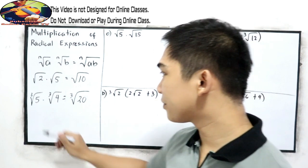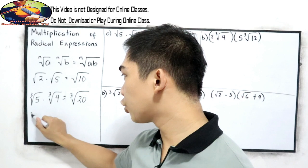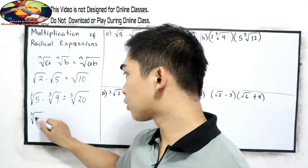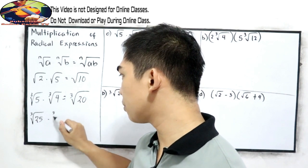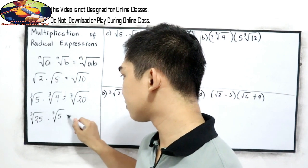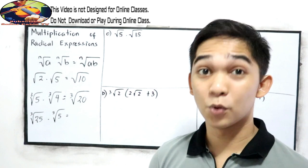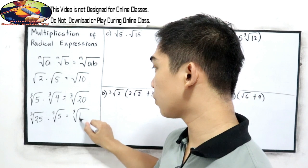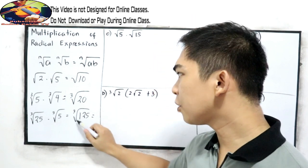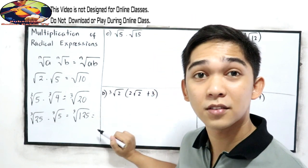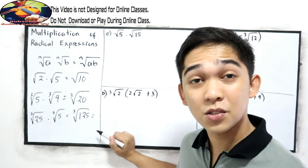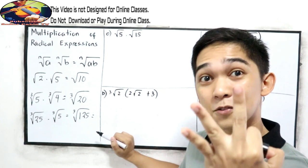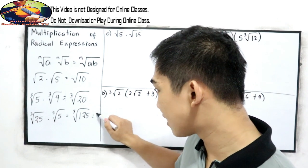Let's say we have cube root of 25 times cube root of 5. Multiply: cube root of 25 times 5, which is 125. Is 125 a perfect cube number? Yes, that is 5 times 5 times 5. So the final answer is 5.